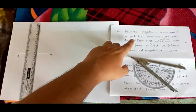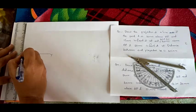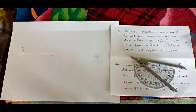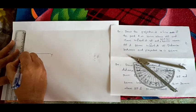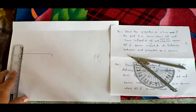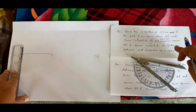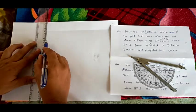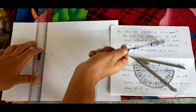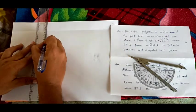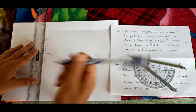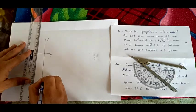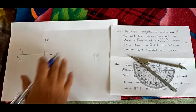We will see the same problem: draw the projection of a line if point A stands 10 mm above HP. So A-dash will be 10 mm above the XY line, and 15 mm in front of VP means 15 mm below the XY line. Mark A on the same line. They have told that the distance between end projectors is 60 mm, so measure 60 mm and draw a projection line, then mark point B. B-dash is 40 mm above HP, and B is 60 mm in front of VP. So you have drawn A-dash, A, B-dash, B.